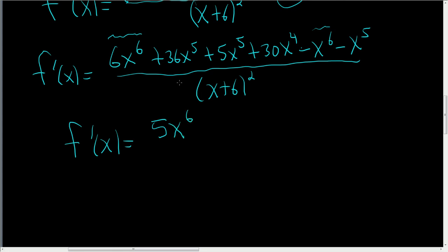Now let's look at the x to the fifth terms. So 36 plus 5 is 41 minus 1 is 40. So plus 40x to the fifth. And then we just have the x to the fourth terms. That's just this guy here.